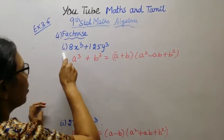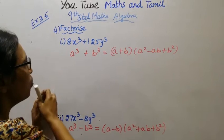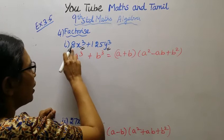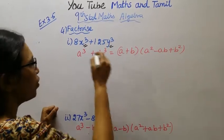4th factorize, first sum: 8x³ + 125y³. This is how we do it. x³, y³ - 8 is some number cubed, 125 is some number cubed.